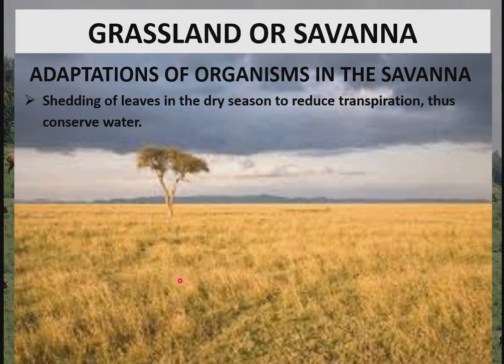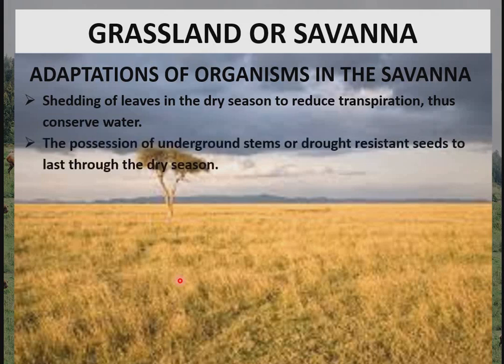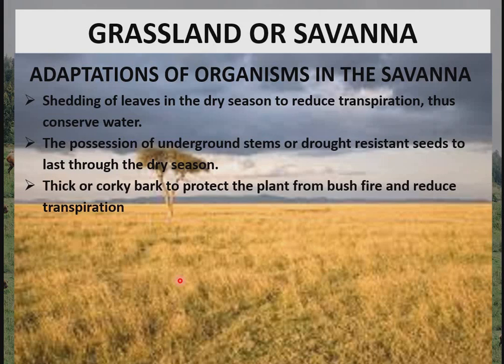Adaptations of organisms in the savannah: plants are able to shed their leaves in the dry season to reduce transpiration and conserve water. Plants that shed their leaves are called deciduous plants. They also possess underground stems or drought-resistant seeds to last through the dry season. They have a thick, corky bark to protect the plant from bushfire and reduce transpiration, as they have a low number of lenticels on their stems.